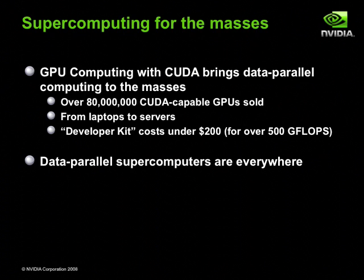Today, the installed base of CUDA-capable GPUs is over 80 million. NVIDIA sells 1 million GPUs a week, which translates to about 100 GPUs a minute. GPUs are also inexpensive — you can get a graphics card capable of well over 500 gigaflops for under $200. The impact of this is that data-parallel computers are everywhere. Computing on massively parallel processors has gone from a handful of practitioners at a handful of national labs and universities to something that is truly ubiquitous. And CUDA makes this power accessible.